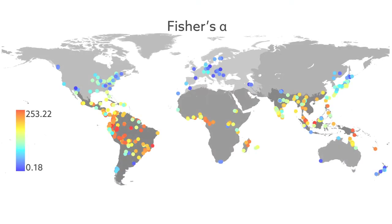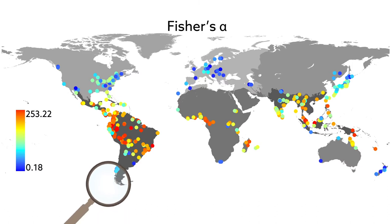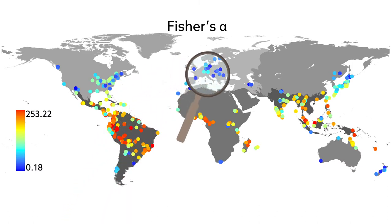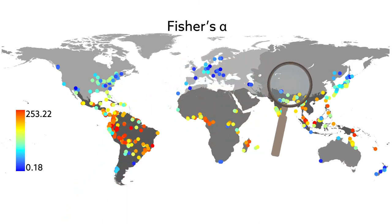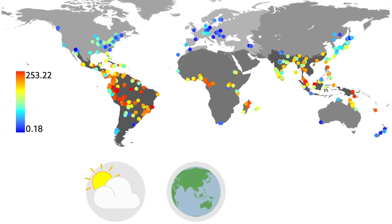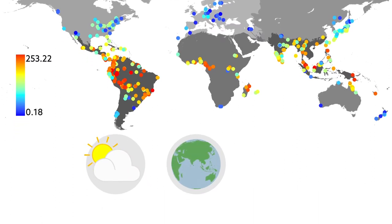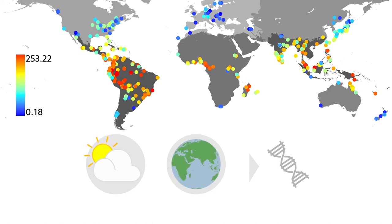In a recent study, scientists from Japan examined how the diversity of woody plant species varies across continents and across the entire planet. It's the first study of its kind to find patterns in a global-scale dataset. The findings appear to confirm long-standing hypotheses about the roles of climate and geography in the evolution of life on Earth.